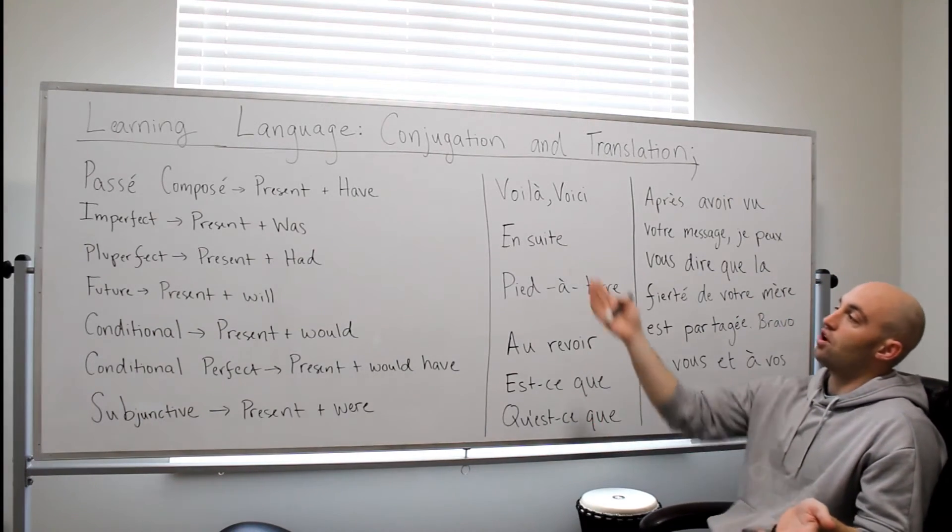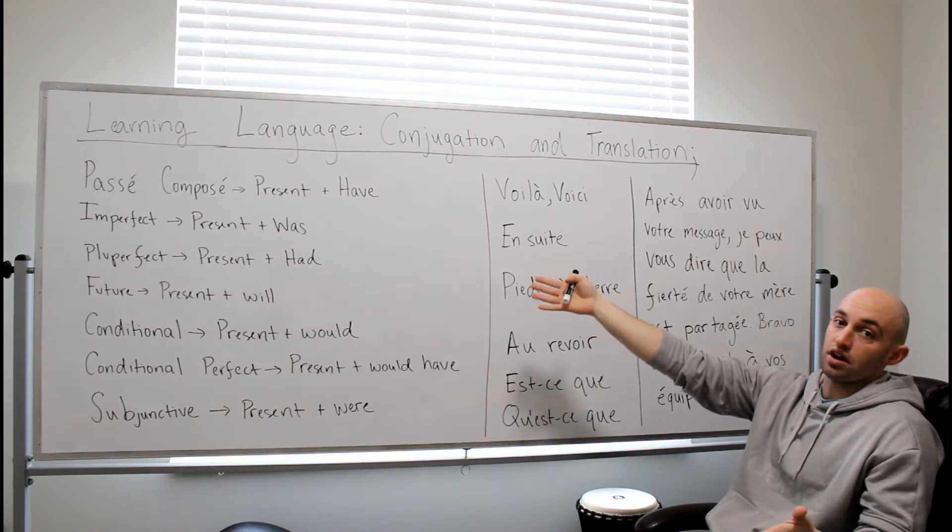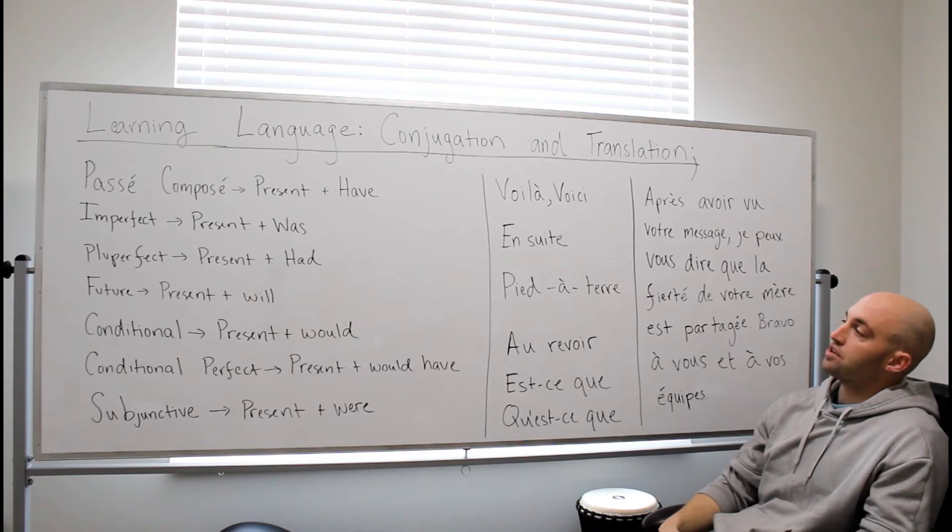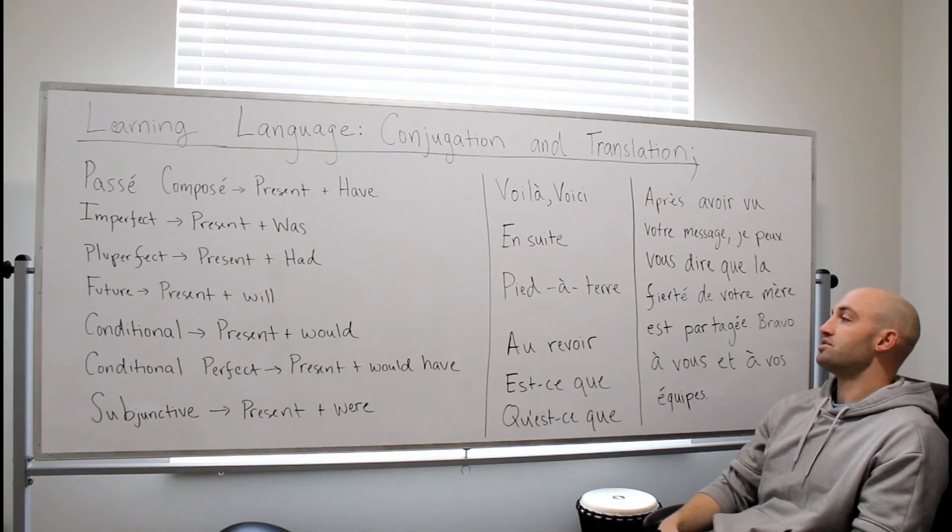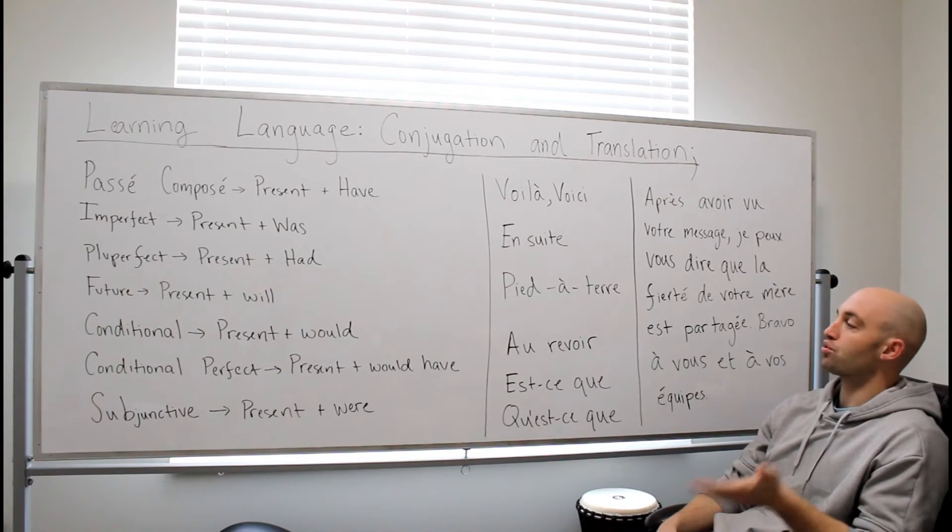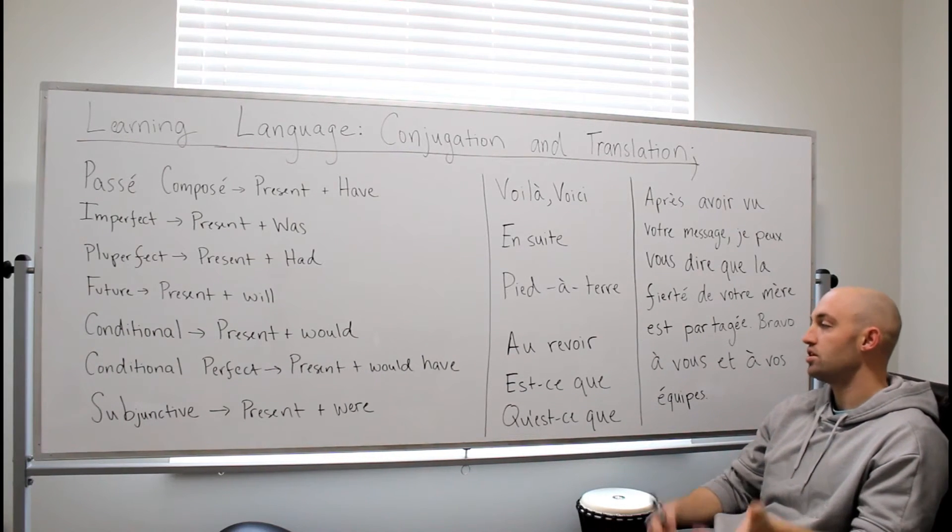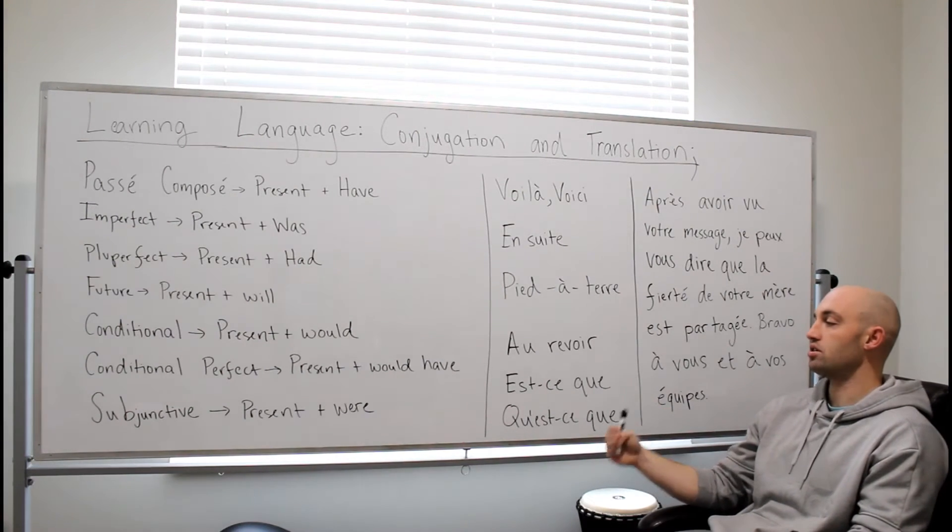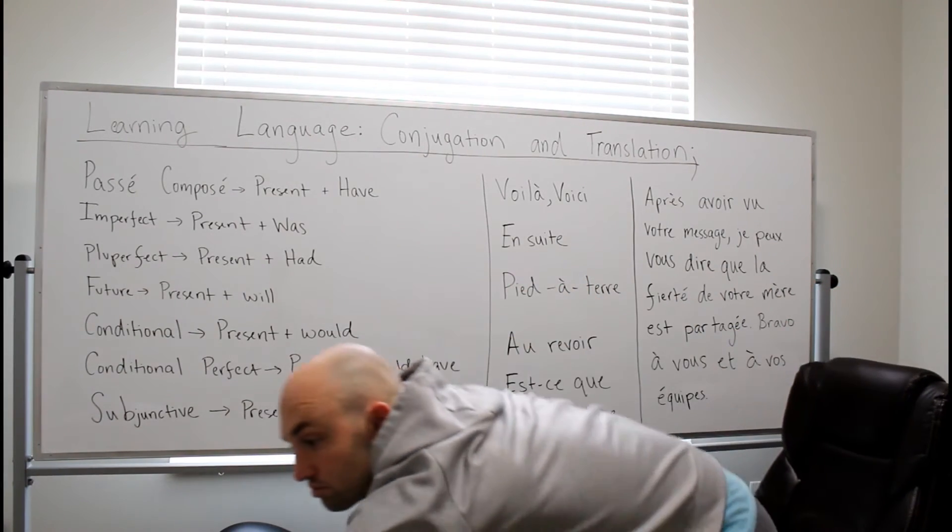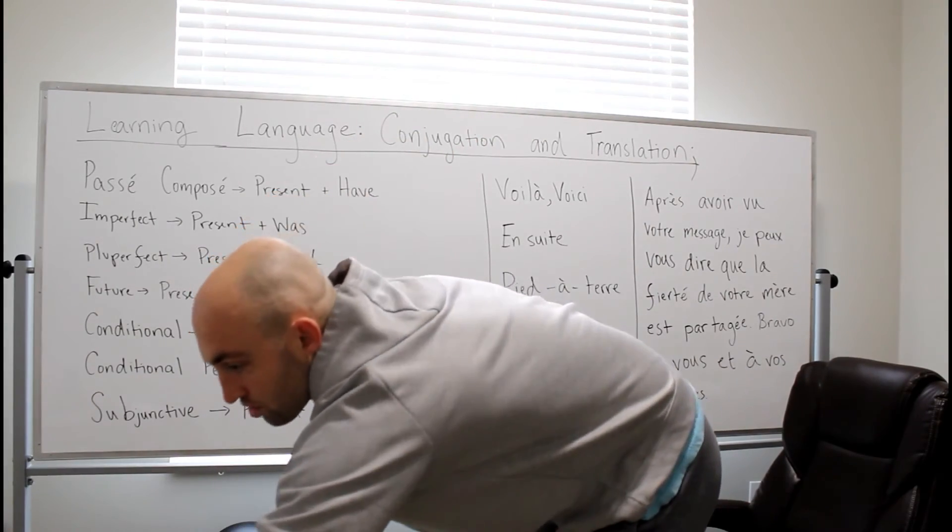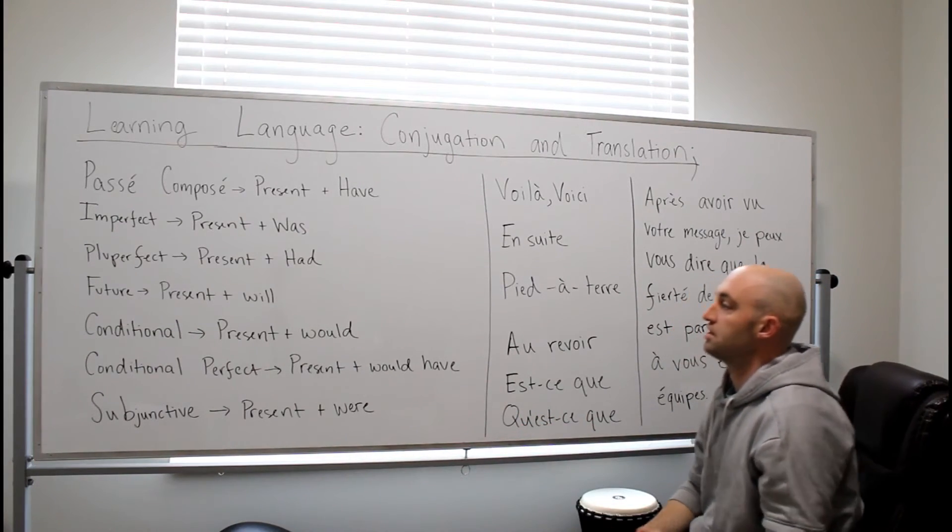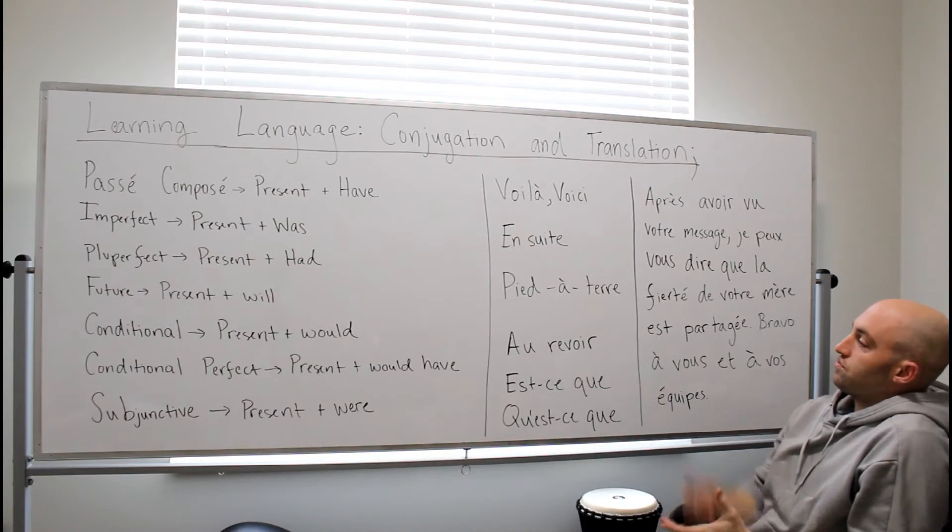But passé composé is always translated literally as present, the present verb plus have. Imperfect, imparfait, is always present plus was. Plus-que-parfait is present plus had. Future, futur, present plus will. Conditional, present plus would. Conditional perfect, present plus would have. And subjunctive, present plus were. I had this written on a little cheat sheet note study thing. I don't use this anymore, but when I was first learning French, it was my first second language or other language, non-native language. So this is what I use, and this is for sure correct.